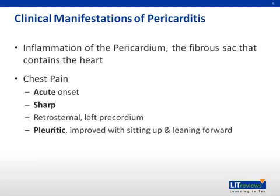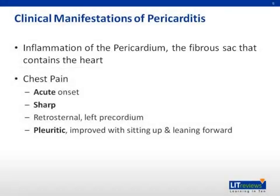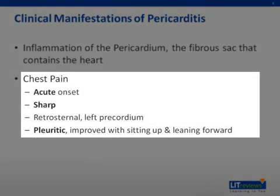It helps to understand that pericarditis is essentially inflammation of the pericardium, which is a fibrosac that contains the heart. Patients typically present with chest pain that is acute onset, sharp, retrosternal, or along the left pericardium. It's pleuritic in nature, which means it varies with inspiration and expiration. And classically, it's improved with sitting up and leaning forward.